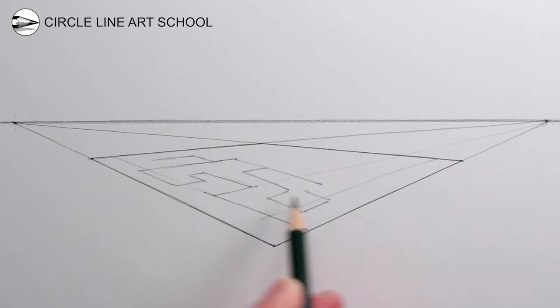Once you have the basic shape of a maze in two-point perspective, at the moment it's two-dimensional looking. It has width and length but no depth to it.